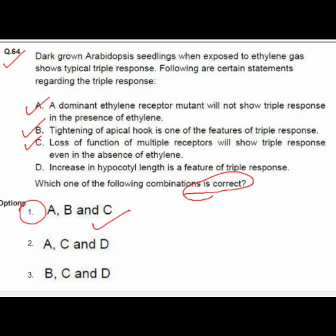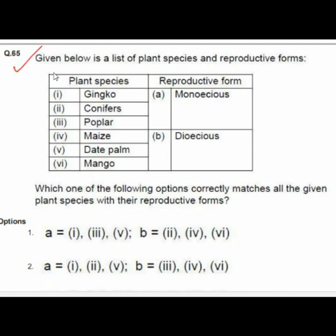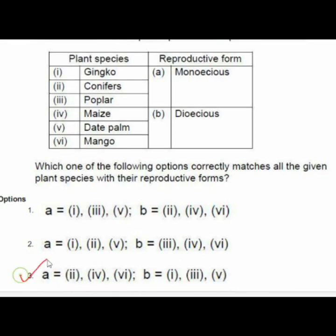Question 65 lists plant species and reproductive forms to be matched. Option 3 is correct: A matches with 4 and 6; B matches with 1, 3, and 5.